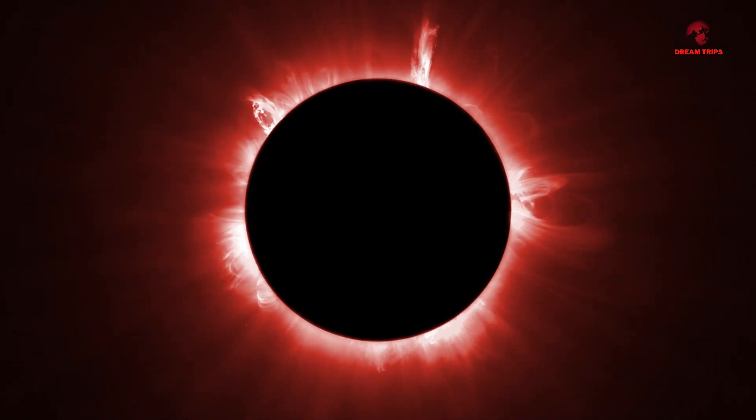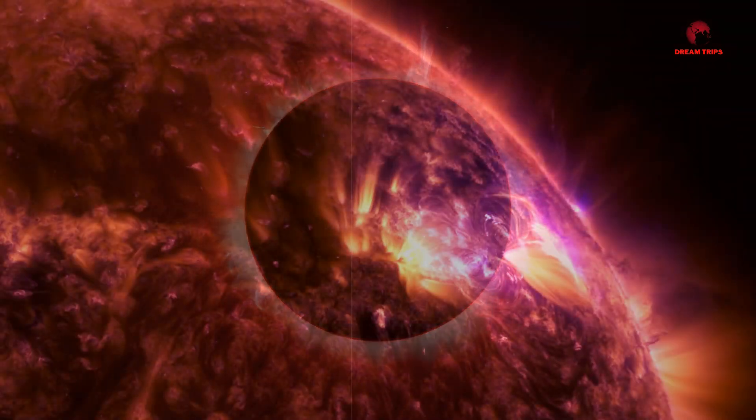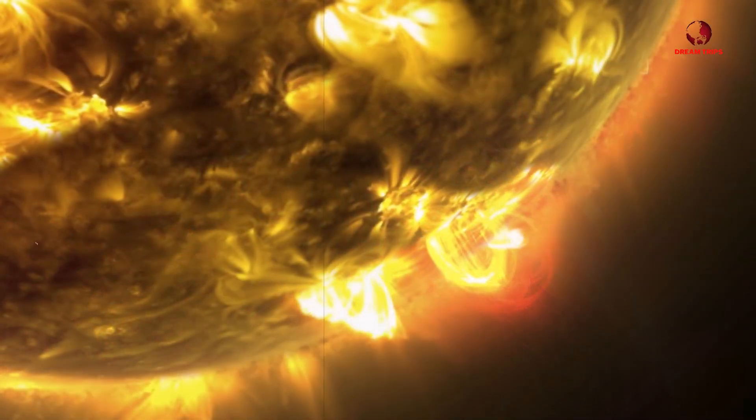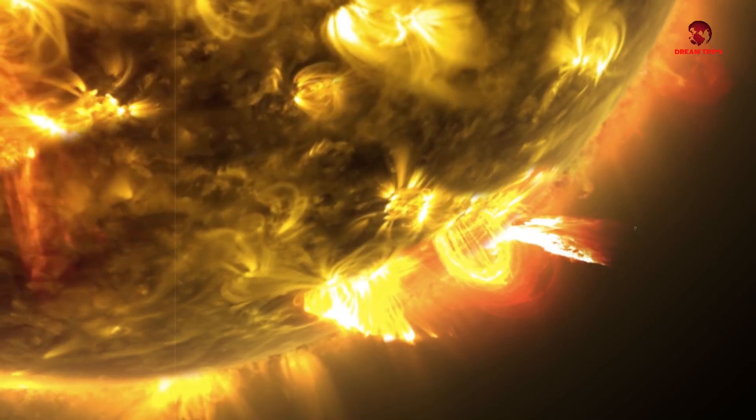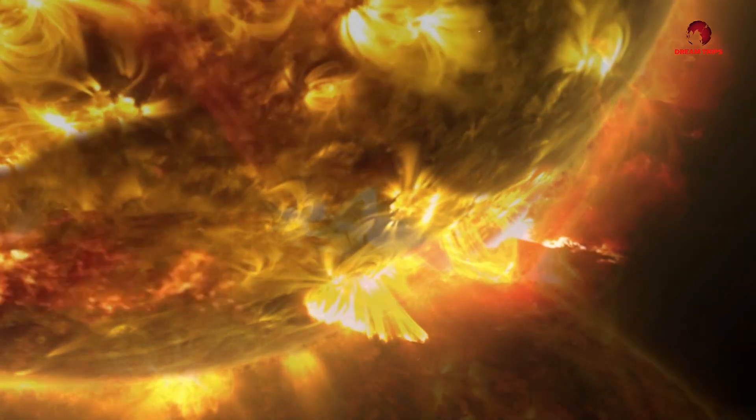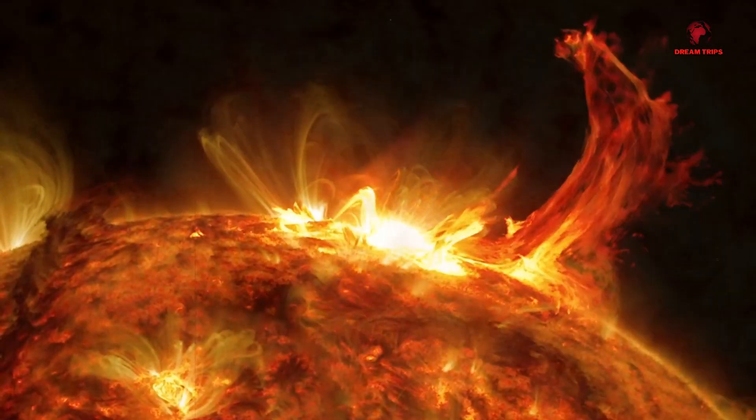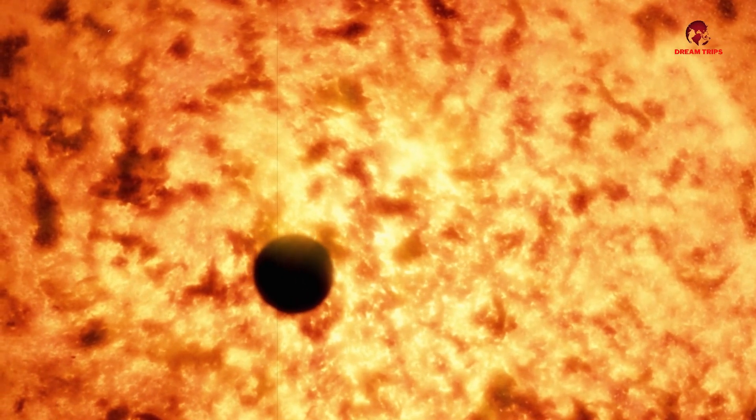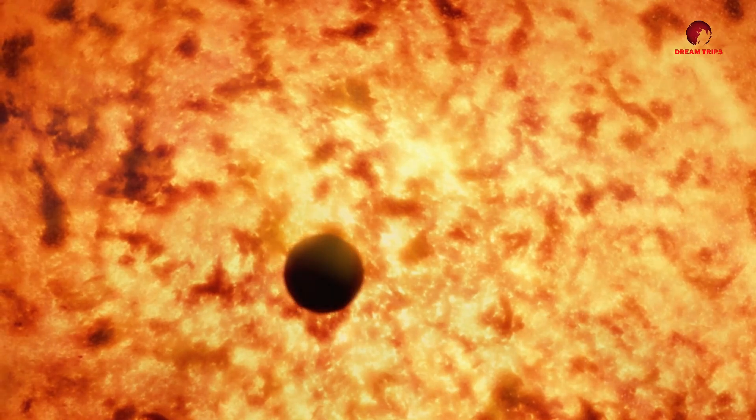Did you know that in 2012, a solar storm of Carrington magnitude narrowly missed Earth? According to a NASA report, if it had occurred just a week earlier, it would have hit our planet and caused extensive damage to power grids and satellites. This close call serves as a stark reminder of our vulnerability to space weather.